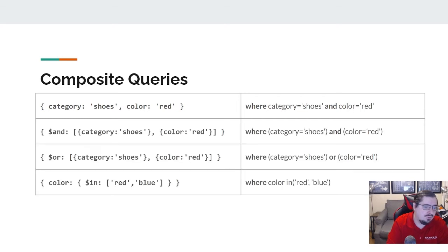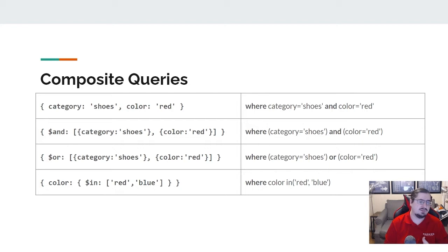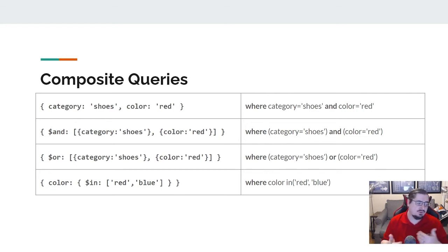If I wanted to expand that using the $and operator — you'll notice that all of these operators, $and, $or, $in, each start with a dollar sign. Anytime you see that in your filter in Mongo, that's what we call an operator. If it doesn't have a dollar sign, it's the name of a field; if it does have a dollar sign, it's an operator — that's how we distinguish between the two.